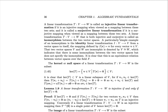We call it surjective if it is a surjective mapping when viewed as a mapping between these two sets, in the sense that every vector W in W is covered by the image of some vector V in V. A linear transformation T from V to W that is both injective and surjective is called an isomorphism between the two vector spaces. Since we know it's bijective, another way of phrasing this is: an isomorphism is a bijective linear transformation.